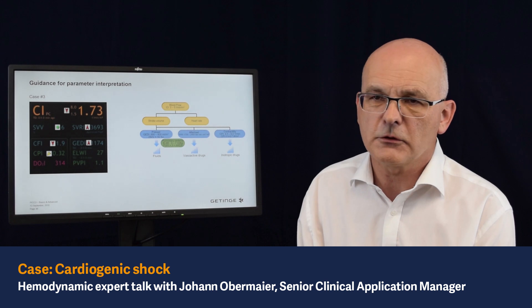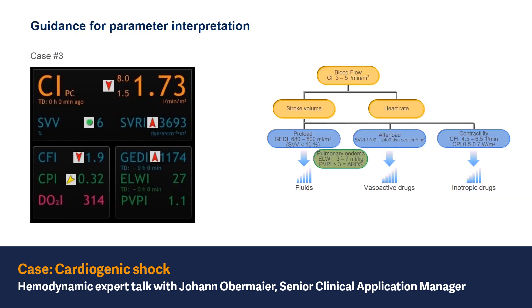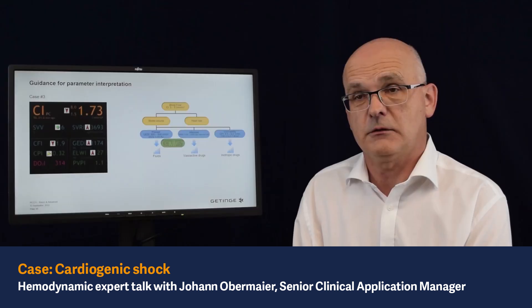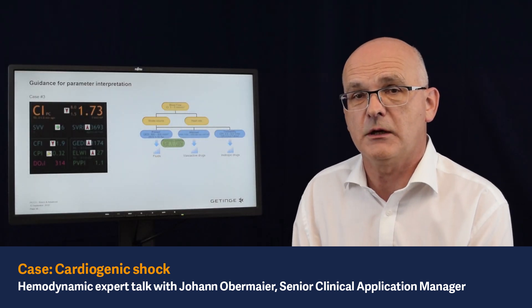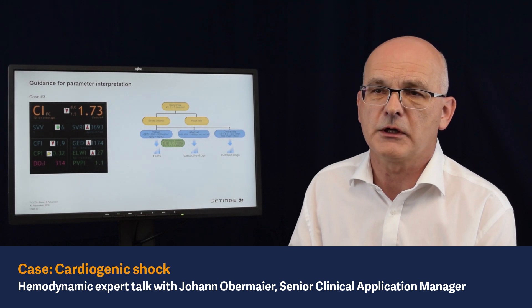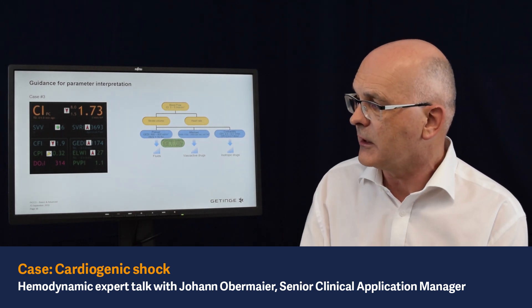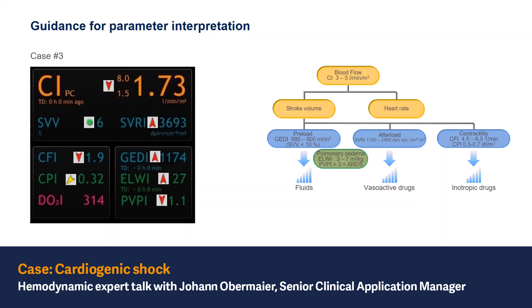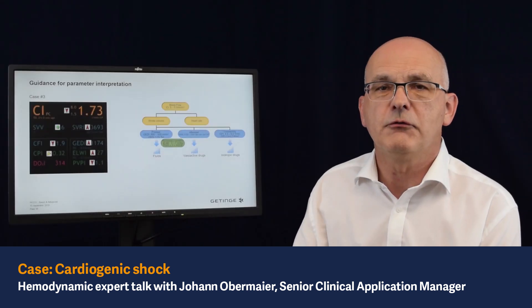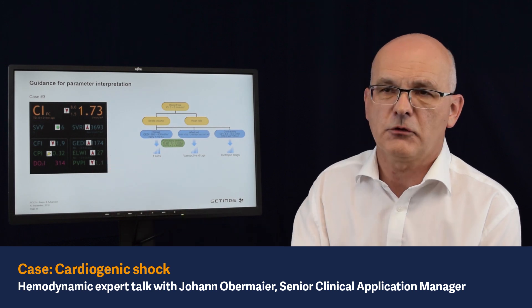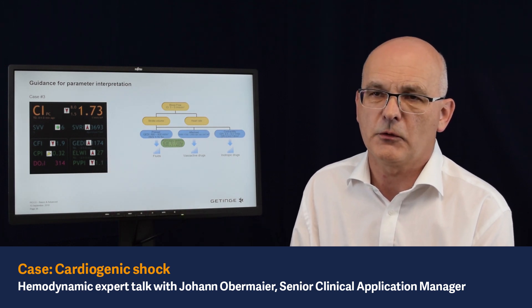Last but not least, the lung parameters. The extravascular lung water index shows a value of 27 — extremely high. This patient is definitely under pulmonary edema. When we see high lung water values, we should look at the pulmonary vascular permeability index. In this case it's quite low, meaning most likely the lung water is due to fluid overload, which is also confirmed by the global end-diastolic volume index.